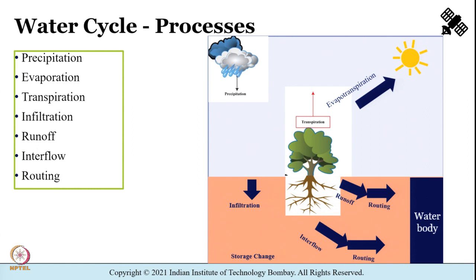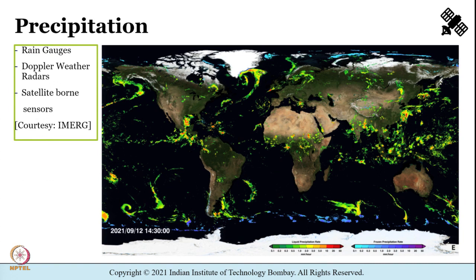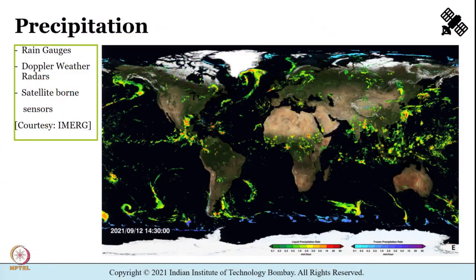With respect to precipitation, we have already seen that it can take many forms and it can be measured either at a point using gauges or estimated over an area using Doppler weather radars or satellite-borne sensors. Typically a hydrological model is fed with precipitation which is gridded at regular intervals throughout the length of simulation. What you see here is the precipitation dataset from IMERG.